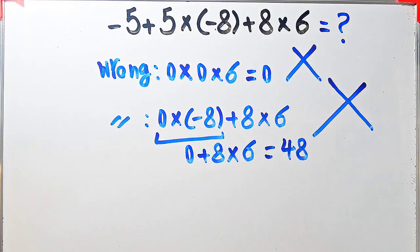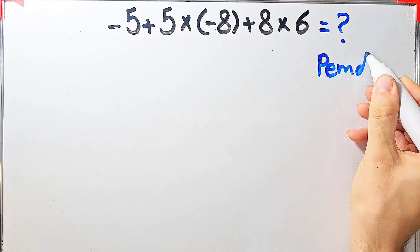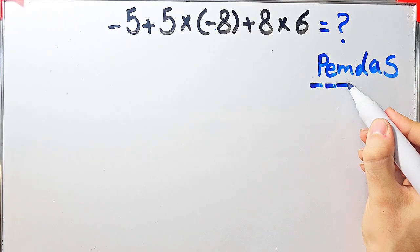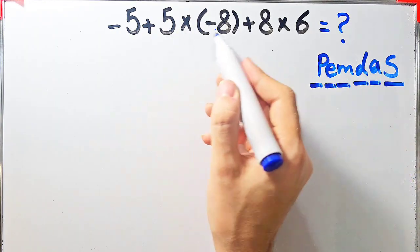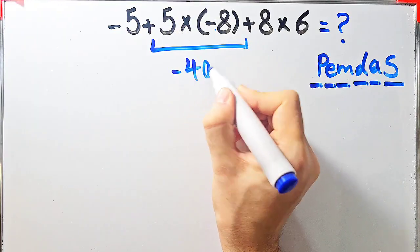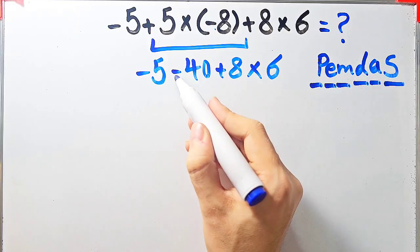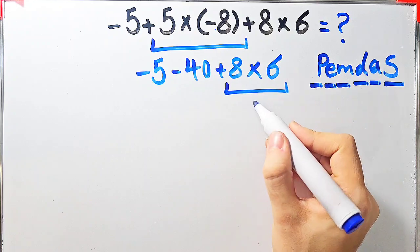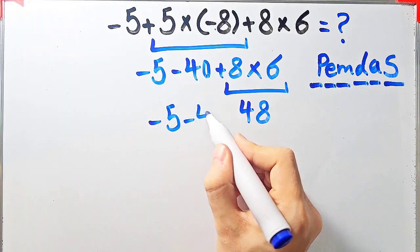Let's solve this correctly using PEMDAS — parenthesis, exponent, multiplication, division, addition, and subtraction. According to PEMDAS, we simplify multiplication first: 5 times negative 8 equals negative 40. Now the question is: negative 5 minus 40 plus 8 times 6. We still have multiplication, so we simplify 8 times 6 equals 48. Now the question is: negative 5 minus 40 plus 48.